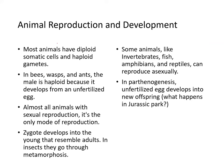Most animals have diploid somatic cells and haploid gametes. Bees, wasps, and ants — the male is haploid because it develops from an unfertilized egg. Almost all animals with sexual reproduction use it as the only mode of reproduction, and the zygote develops into a young that resembles the adults. In insects, they go through some metamorphosis in order to do so.